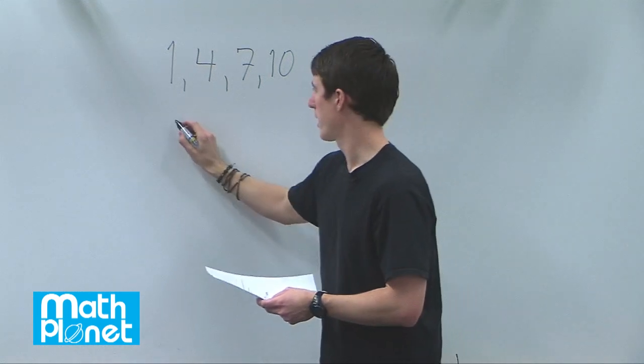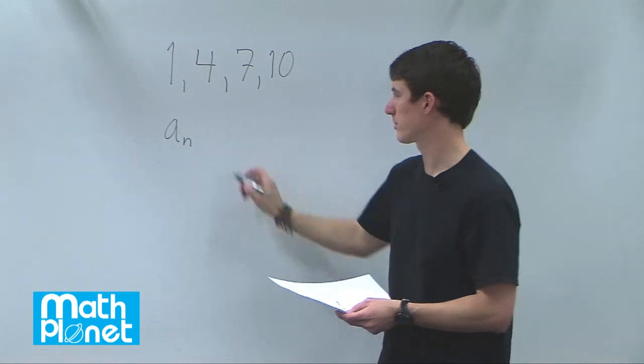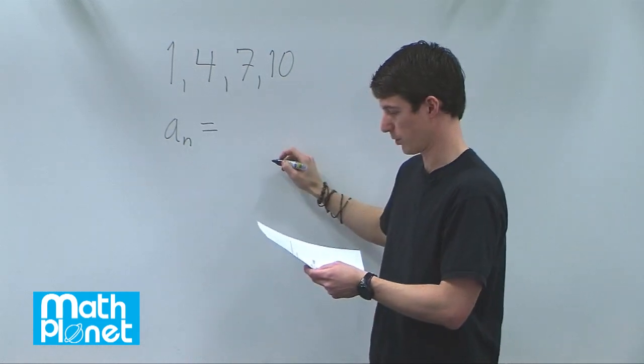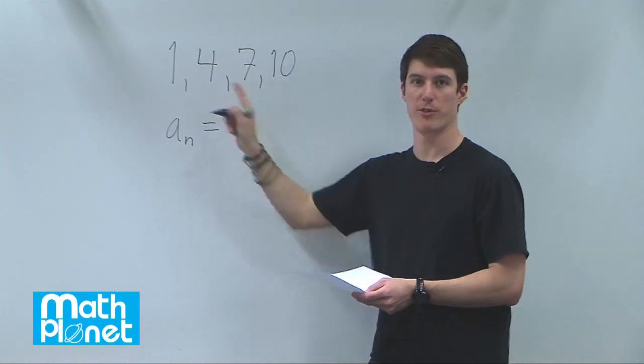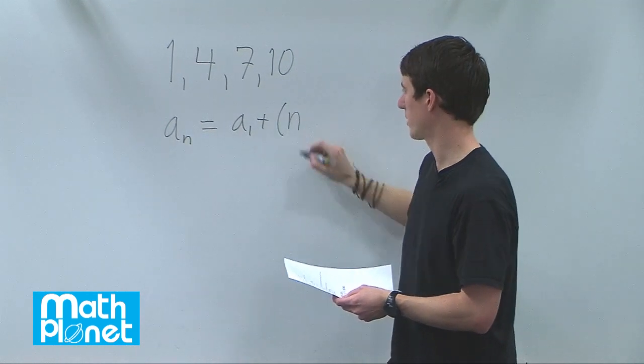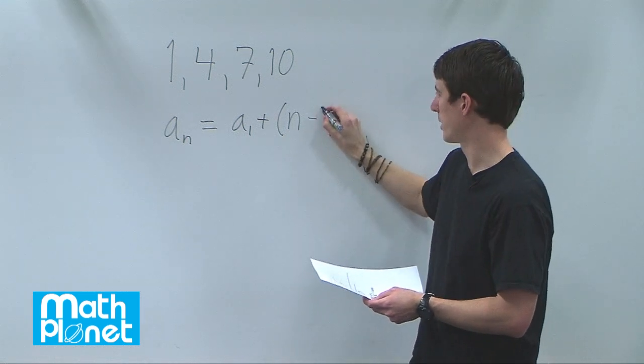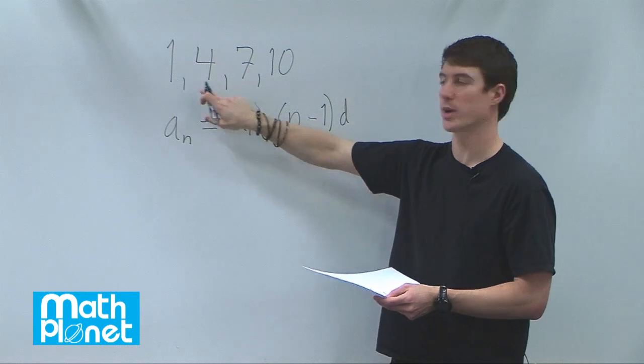So we have the formula a sub n, where n is the number of terms, equals a1, where a1 is the first term, plus n being the number of terms, minus 1 times d, which is the difference between each step.